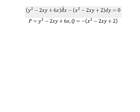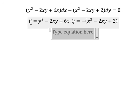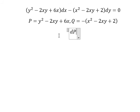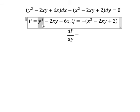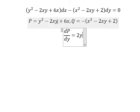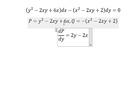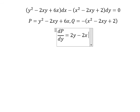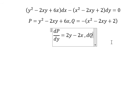Next we have the x, so we do the first derivative of the function with respect to y. So this one we have two y, and this one we have negative two x, because this one is just a number, so if we do the first derivative you get zero.